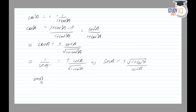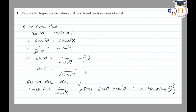Now let's find the value of tan A in terms of cot A. tan A can be written as 1/cot A. So this is the expression for tan A in terms of cot A. We have now written tan A, sec A, cos A, and sin A all in terms of cot A.